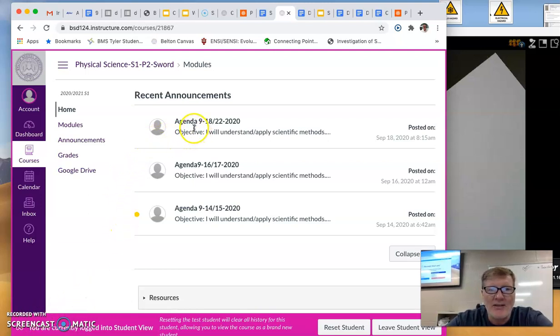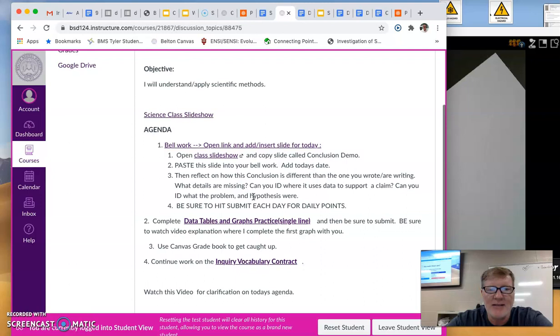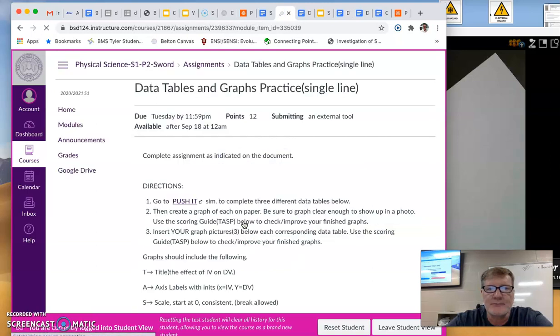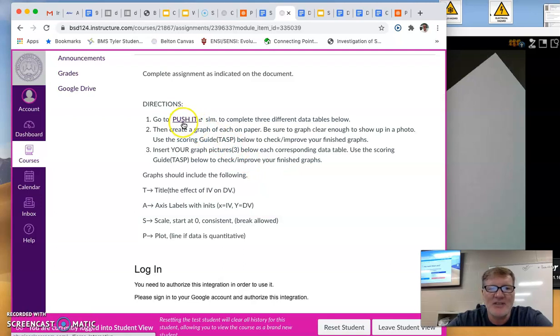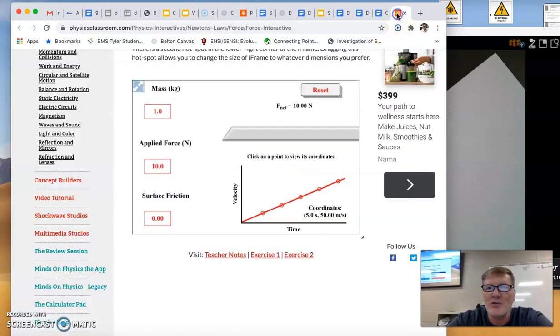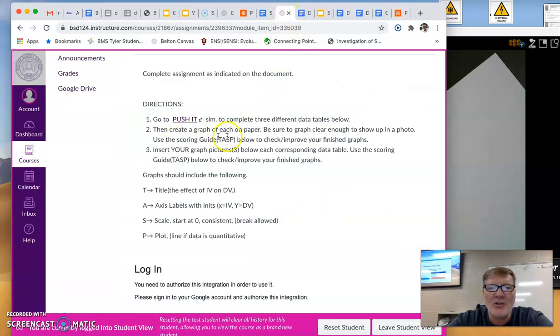We are going to look at our assignment for today. If you would click on Home and go to Agenda, it's called Data Tables and Graphs Practice for Single Line Graphs. And if you open that assignment, it takes you to an assignment where it asks you to open the simulator once again called Push It, which would look like this. And then you're going to create graphs on paper and then take pictures to submit them.